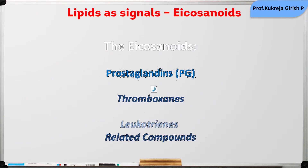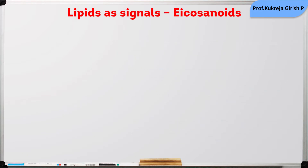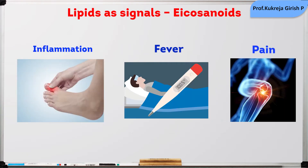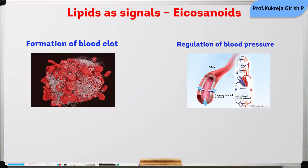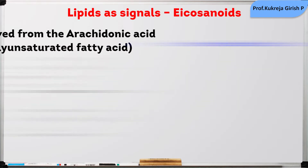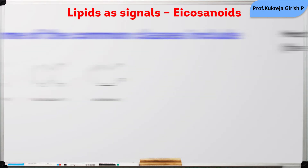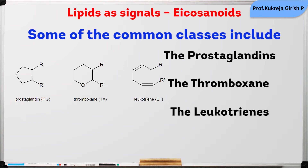Eicosanoids are the fatty acid derived hormones. These are involved in the reproductive function, inflammation, fever, pain, formation of blood clots, regulation of blood pressure and gastric acid secretion. Most of these are derived from the arachidonic acid. Some of the common classes include the prostaglandins, thromboxanes and leukotrienes.